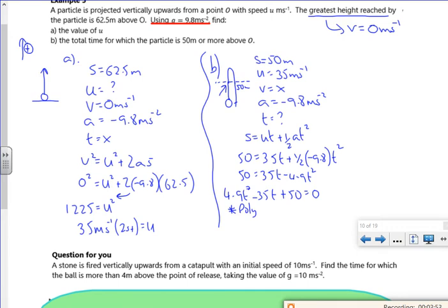Poly gives us t is 1.974 or t is 5.168. So at 1.974 seconds it initially hits 50 meters, and then it goes above, and then by 5.168 it hits 50 meters again, so the time above 50 meters has to be 5.168 minus 1.974.